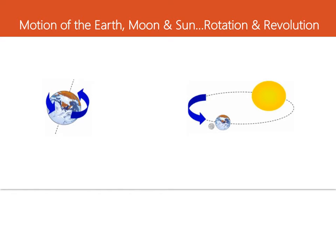The Earth, Sun, and Moon are constantly rotating. The Earth and Moon are also constantly revolving. When the Earth, Sun, and Moon spin on their own axis, they are performing the motion called rotation. So when they're spinning — here's the axis, here's a picture of the Earth doing it — if they're spinning on their own axis, that's called rotation.